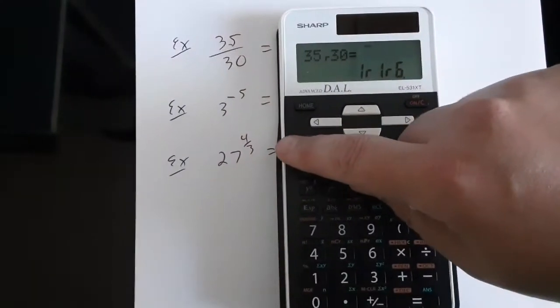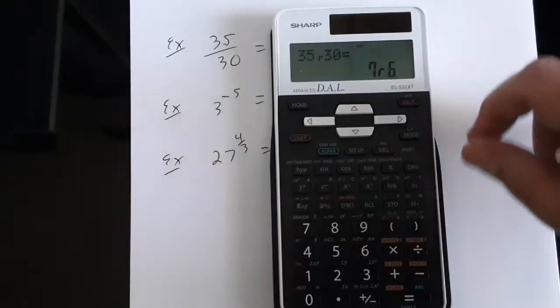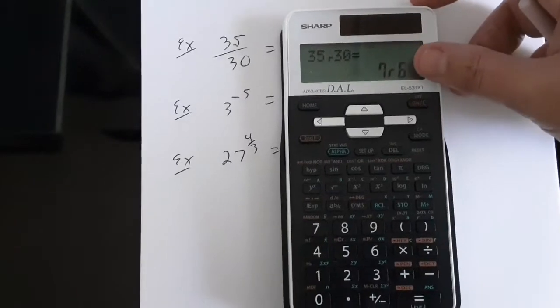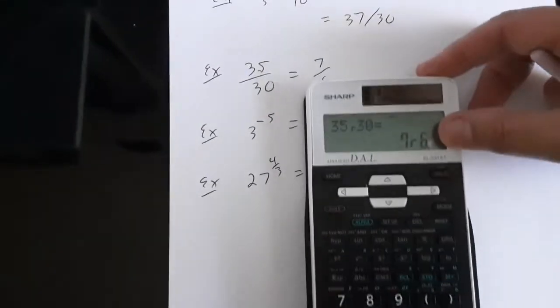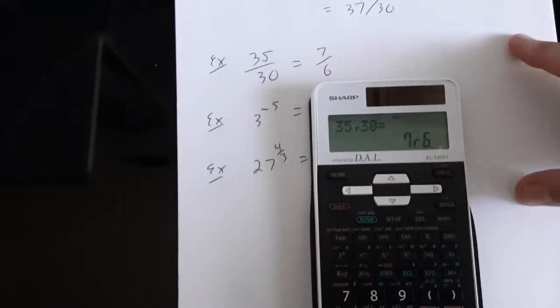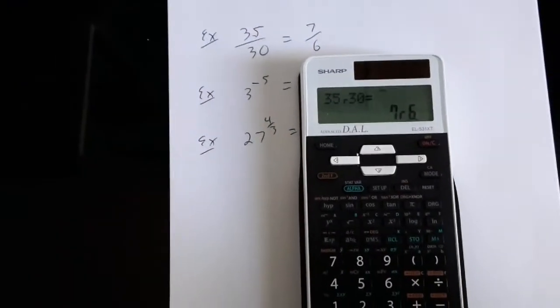Or as an improper fraction, second function, fraction button, that would be the same thing as 7 sixths. So in simplest terms, 35 over 30 is the same thing as 7 over 6.